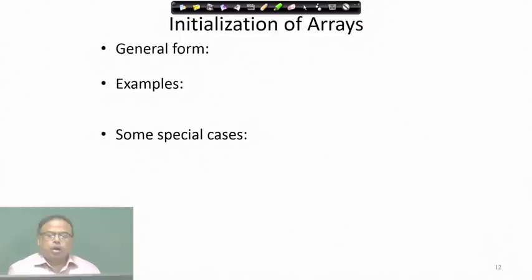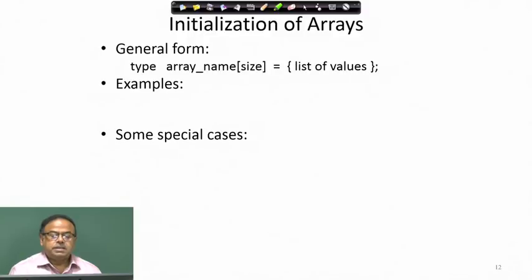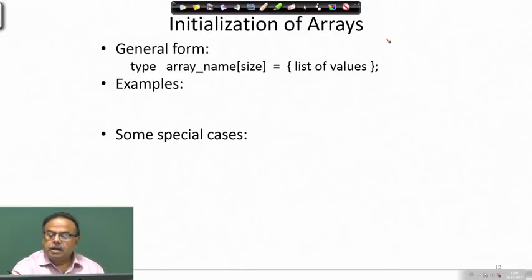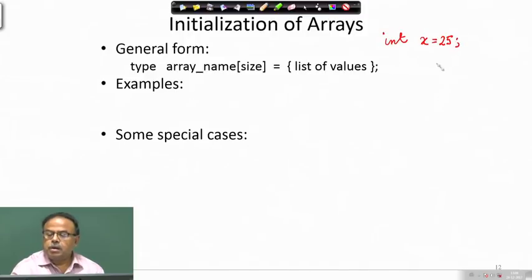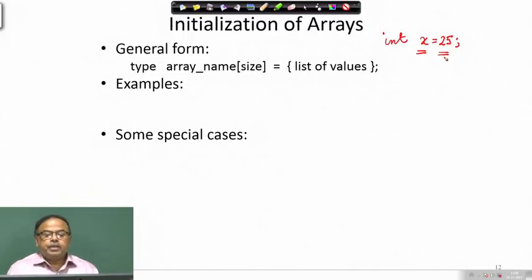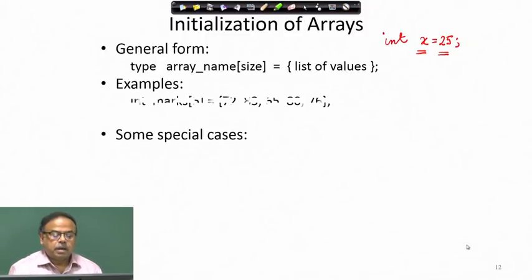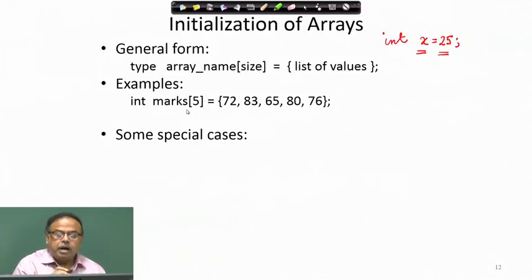The general form of array initialization uses the array name with its size followed by a list of values. Just as we can write int x = 25 to declare and initialize a variable, the same can be done for arrays. For example: int max[5] = {72, 83, 65, 80, 16}.